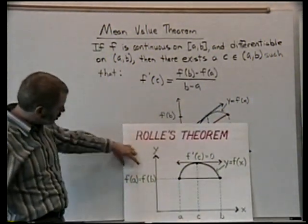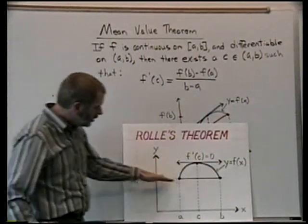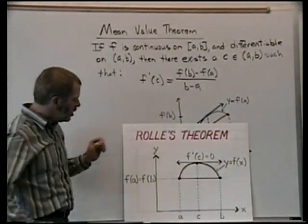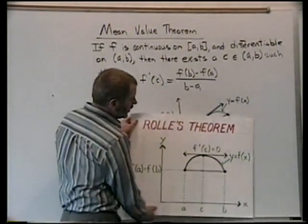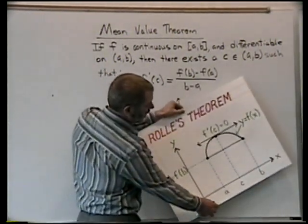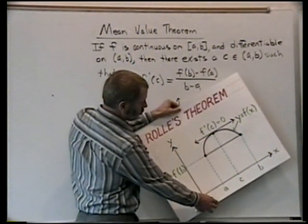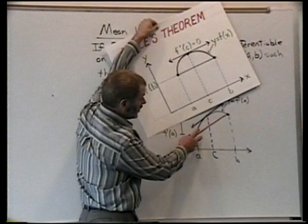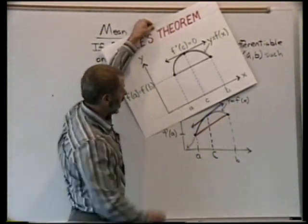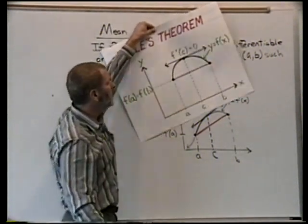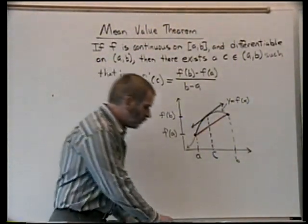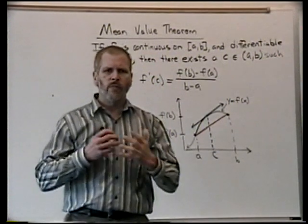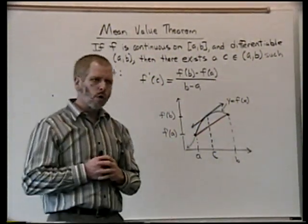Rolle's theorem had the added condition that f(a) and f(b) had to be the same. We can notice that if we take Rolle's theorem and just rotate the plane, we get a graph that looks exactly like the mean value theorem. So it would be plausible and intuitive that the mean value theorem should work.